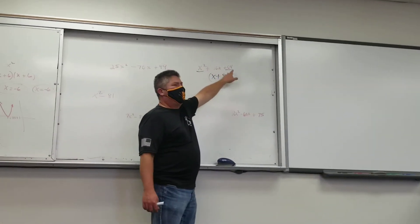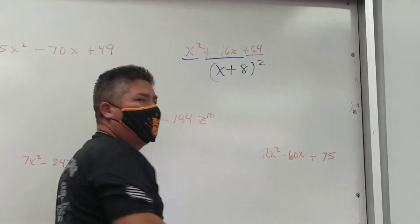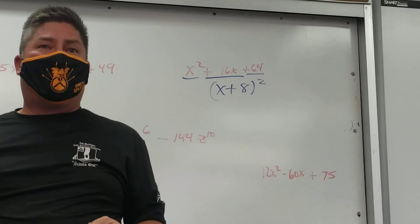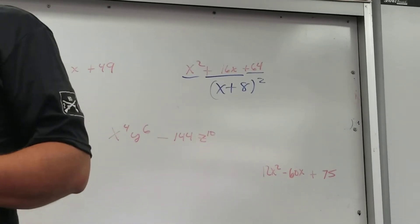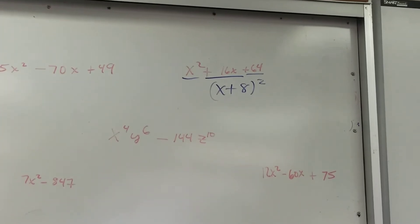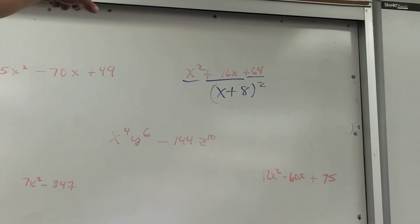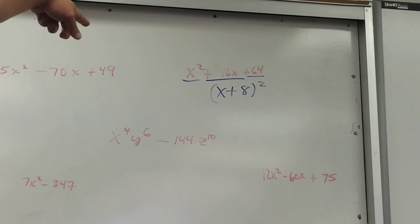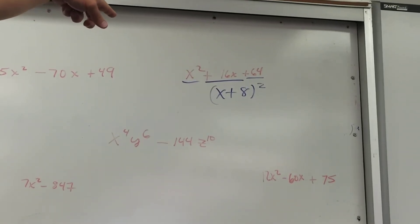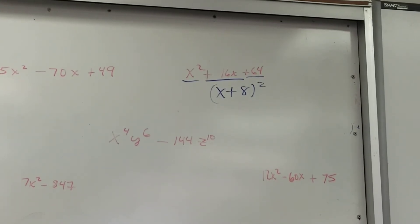So if those are perfect square trinomials, there's something that still has to be true about this middle term. Because maybe it isn't going to use 8 and 8, right? Are there other factors of 64? Yeah, I could have used 4 and 16, right? But then that sum would have been 20. So if that would have been a plus 20 in the middle, would this have been a perfect square trinomial factorization? No.